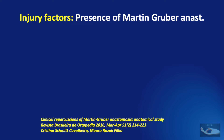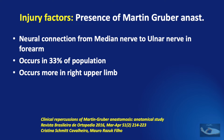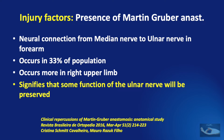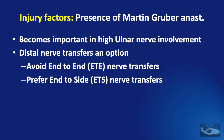The presence or absence of the Martin Gruber anastomosis modifies the treatment protocol. This is a neural connection from the median nerve to the ulnar nerve in the forearm, occurring in about 33% of the population and more commonly in the right upper limb. Its presence means some ulnar nerve function may be preserved even after complete transection proximal to the elbow. It can be detected electrophysiologically by stimulating the median and ulnar nerves at the elbow and wrist and recording the CMAP of the thenar and hypothenar muscles — a difference in amplitude of at least one millivolt confirms its presence.